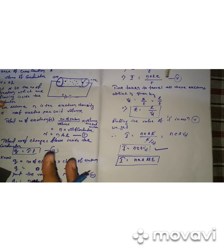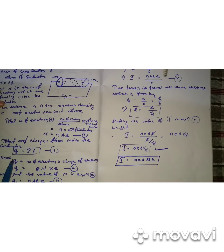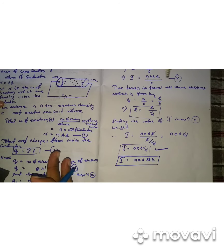In your exam, the type of questions that may arise are: define drift velocity and explain it, and derive the relation between current and drift velocity, which gives I = nAeVd.